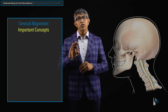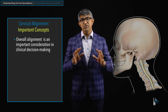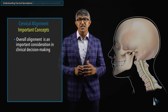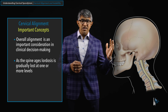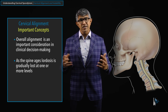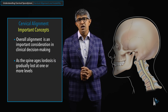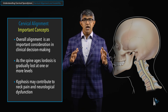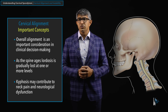When we talk about alignment overall, there are a few important concepts. I look at alignment on all patients during cervical evaluation, because we want to understand their neutral position and what they look like with maximal flexion and extension to get a sense of range of motion. As the spine ages, people lose lordosis — people are born with a beautiful curvature in their neck, and over time they slowly become more pitched forward. This is common and affects many levels, including the lumbar spine. Kyphosis in the neck can contribute to neck pain and sometimes neurological dysfunction.